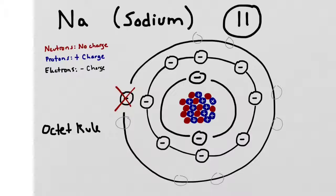In order to satisfy the octet rule, sodium has two options. It could get rid of this one electron and thus have eight electrons in the outer shell, or it could try to acquire seven other electrons to fill all the empty spaces. One of these options requires a small amount of effort; the other requires a lot. The sodium atom is going to want to jettison this electron in order to satisfy the octet rule — that is exactly what's going to happen.